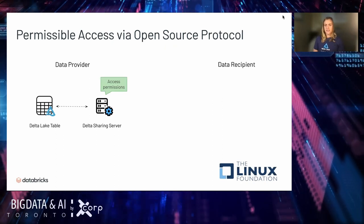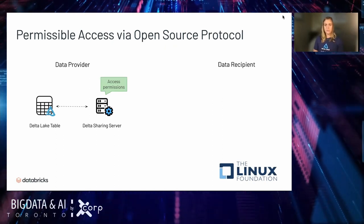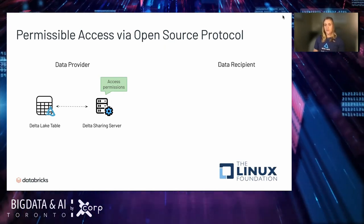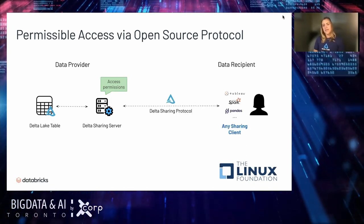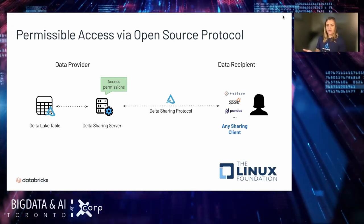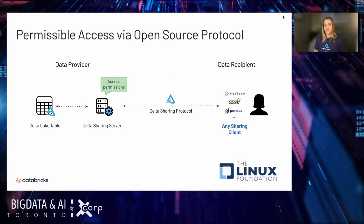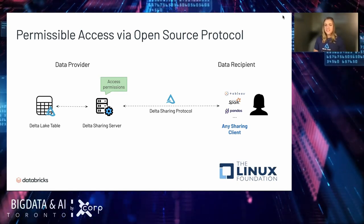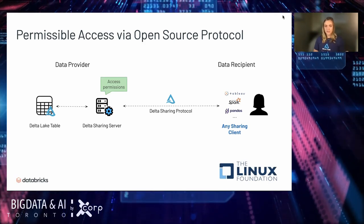The next part of this design is to stand up a Delta Sharing server in front of the tables, which implements the protocol. This server's responsibility is to maintain and enforce access permissions to the shared data. Over on the data recipient side, they can implement any client that implements the Delta Sharing protocol — it could be Apache Spark, Pandas, Tableau, or many others on that growing list of clients. The beauty of this is that the provider doesn't need to know or care about what the recipient is using.